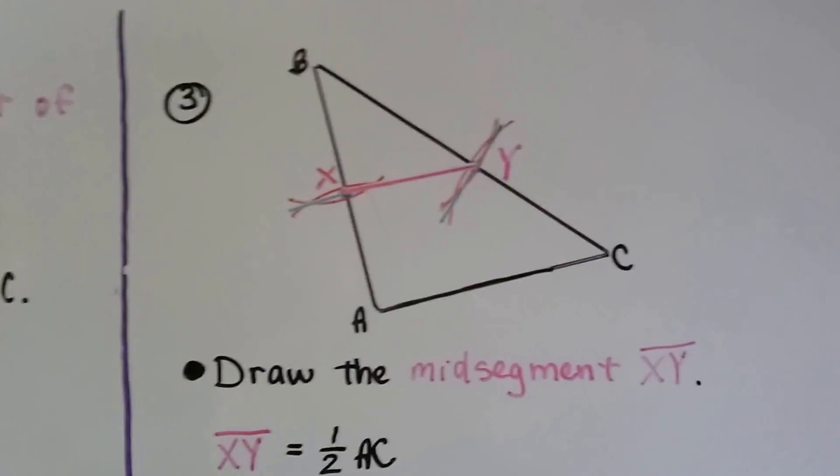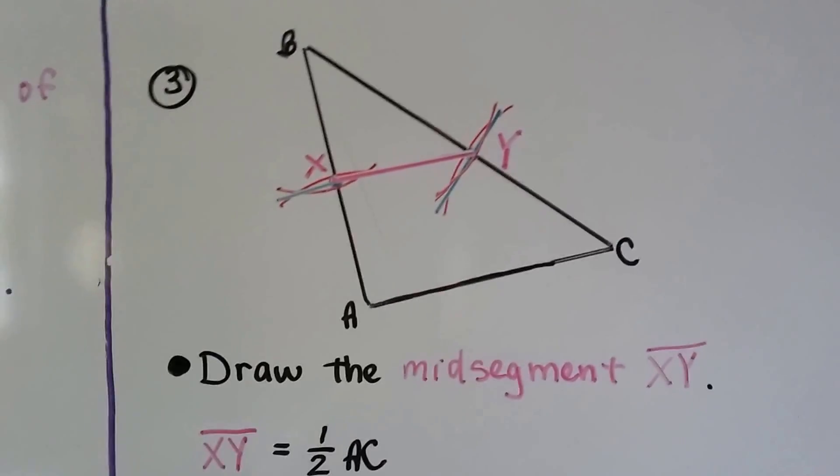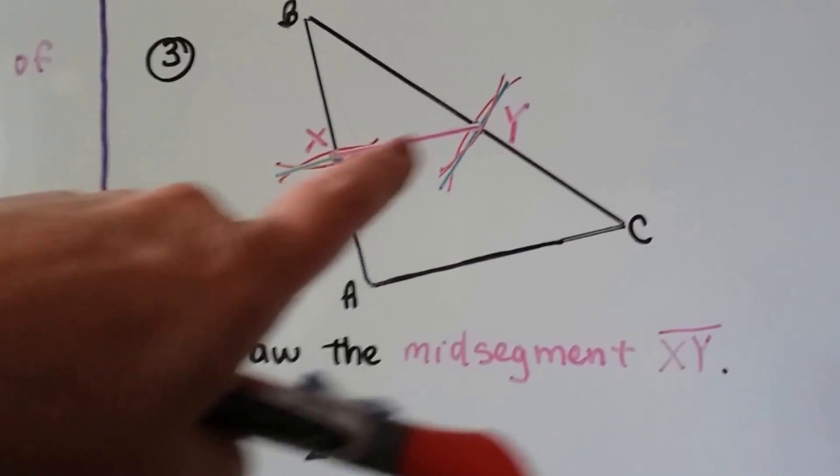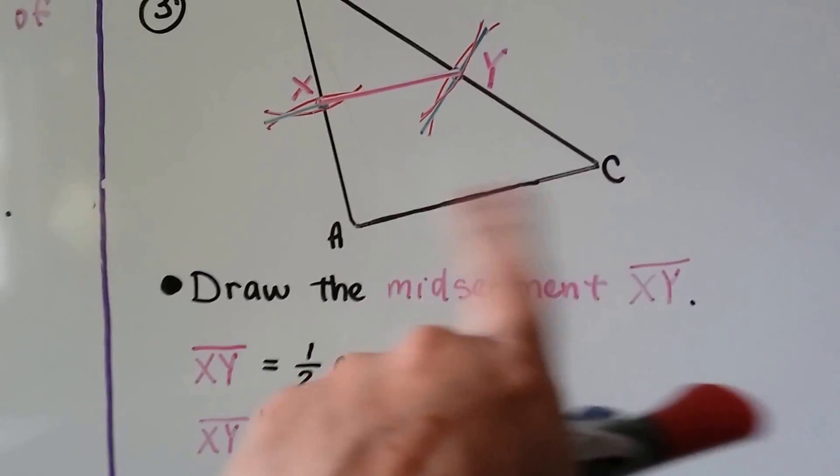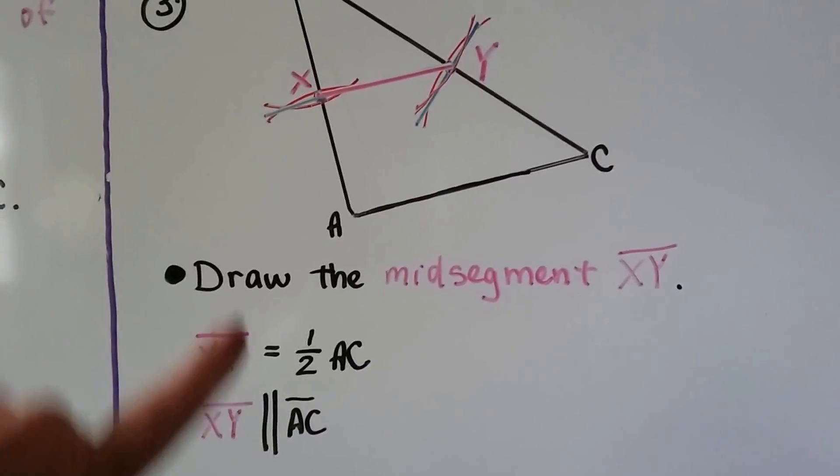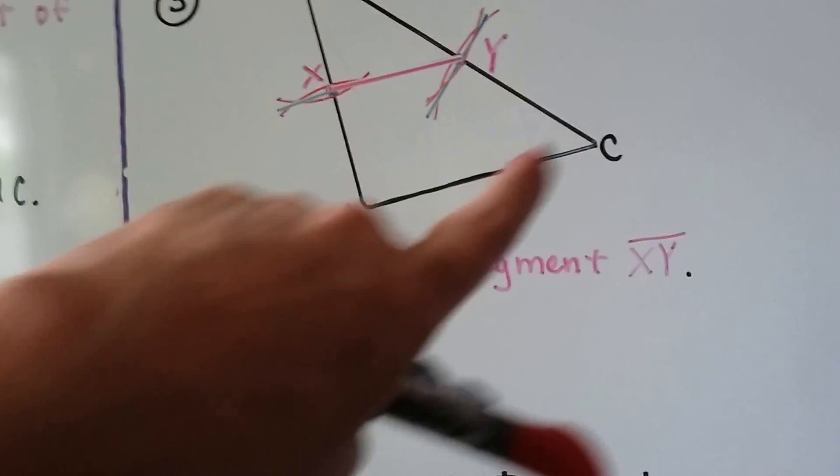Now all we have to do is draw the mid-segment XY. We draw a line from X to Y, and segment XY is half of AC. And segment XY is parallel to AC.